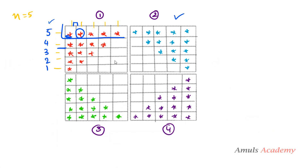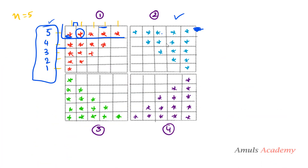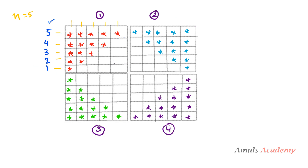Next we want to print pattern 2 next to pattern 1. We need to print these stars in the same row as pattern 1, so the for loop for pattern 2 goes inside the same outer row loop. For pattern 2, we first need to print spaces before the stars. When n is 5: row 1 needs 0 spaces, row 2 needs 2 spaces, row 3 needs 4 spaces, row 4 needs 6 spaces, row 5 needs 8 spaces.